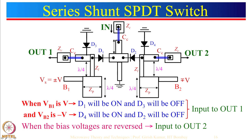This lambda-by-4 length also ensures that when a diode is short circuited here it acts as an open circuit, so input cannot leak to the undesired output. To summarize: input goes to output 1 when Vs is positive, and input goes to output 2 when the other control voltage is positive. We have fabricated this configuration.